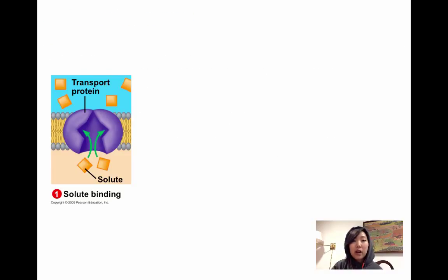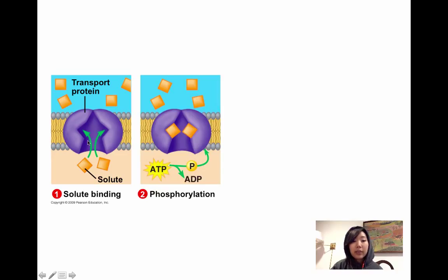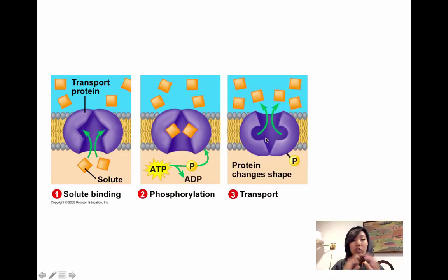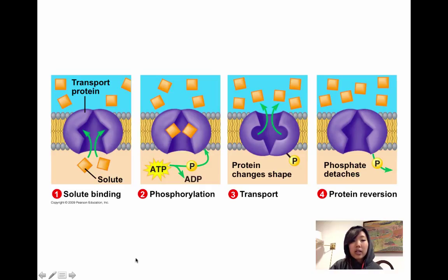In terms of the exact process: first, the solute binds to the transport protein. Then ATP comes and attaches — it phosphorylates the transport protein by attaching its phosphate group onto the protein. In doing so, it changes the shape of the protein, which pops the solute from the low-concentration side to the outside where concentration is higher. Afterwards, the phosphate group detaches. That step — where ATP phosphorylates the protein — is the energy-requiring step, allowing the protein to change shape and move the solute against its concentration gradient.